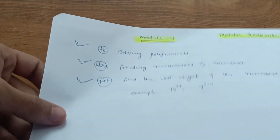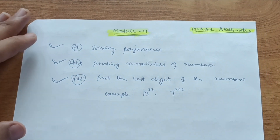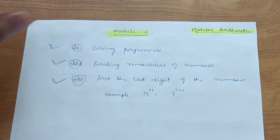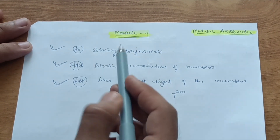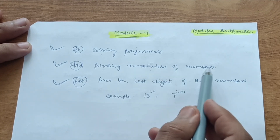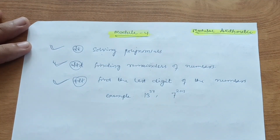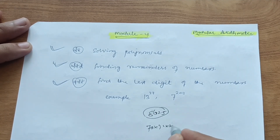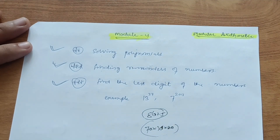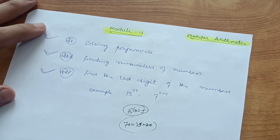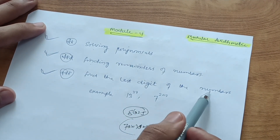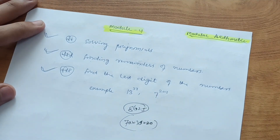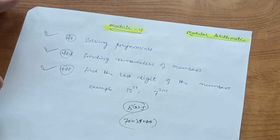Module 4 is the new module for CS branch students — Modular Arithmetic. Focus on finding remainders of numbers. For example, find the remainder of 8628, or 17³⁶ mod 12, or 20 into something. These are easy but carry seven marks and will be in both parts. Also focus on finding the last digit of a number — for example, 13⁴³⁷ and 7²⁰¹³ are examples taken from the model question paper.